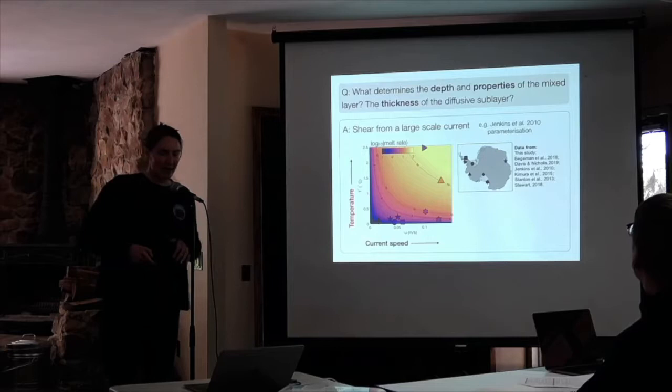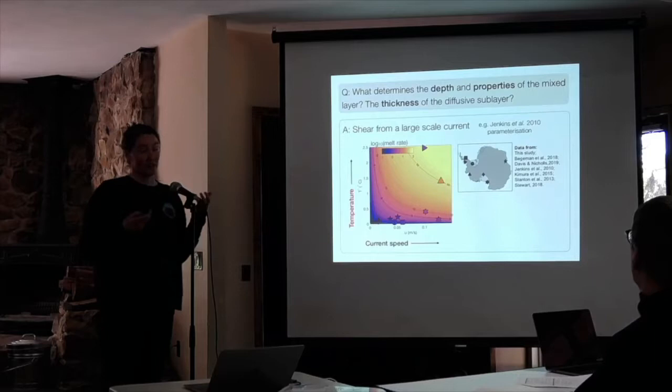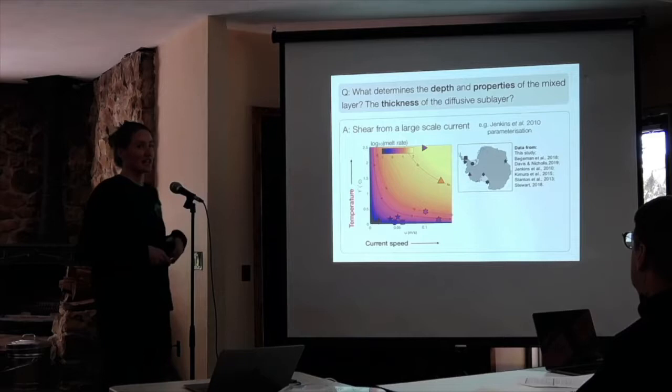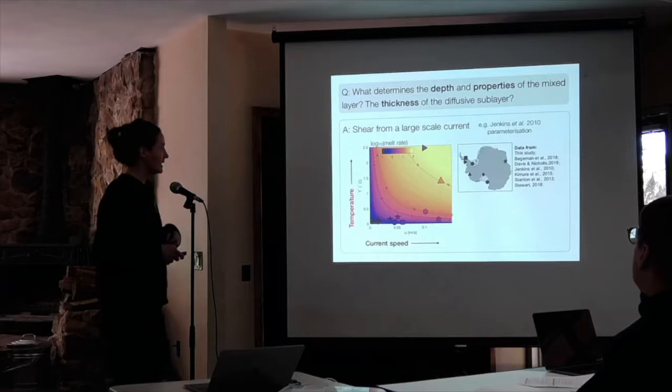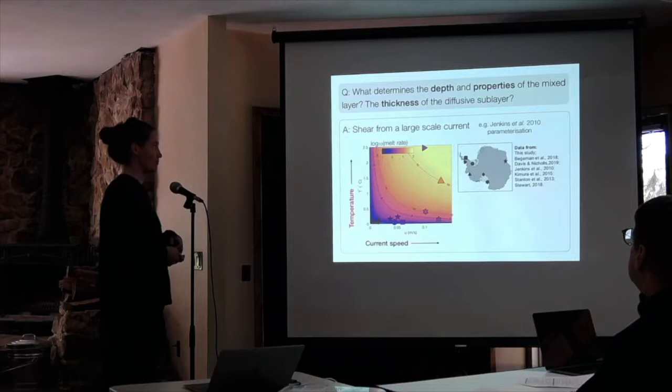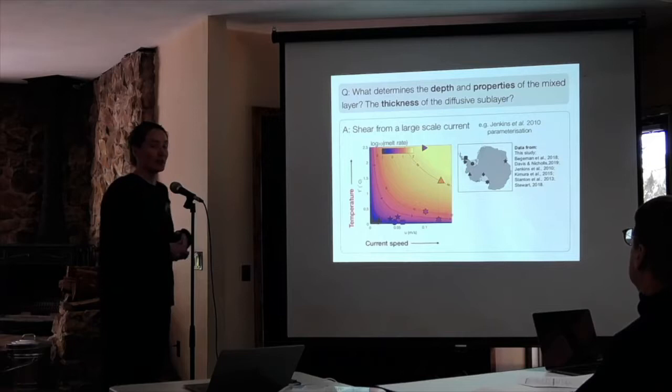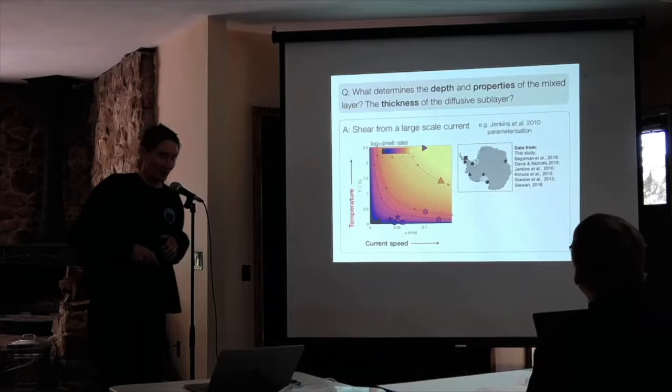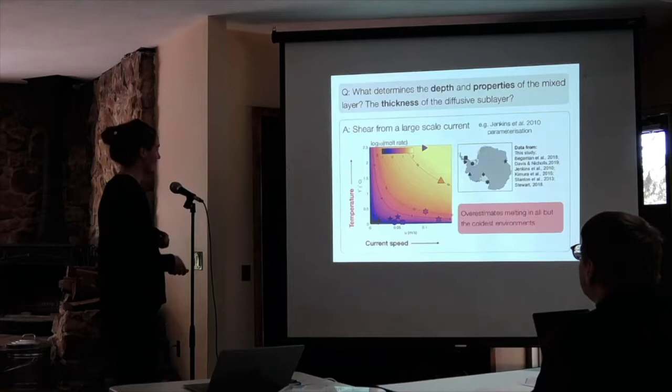I've plotted them all on this figure. The colors of all these symbols are from individual sites and they are the observed melt rates. The misfit between these points and the color map behind them gives you how well or poorly these parameterizations are doing. The upshot is that in all but the coldest environments, they're doing a pretty bad job. The ratio between observed and predicted melt rates varies between about 2 and 30 over all these different observations, barring two cold sites to which the parameterization was tuned.